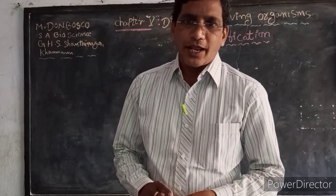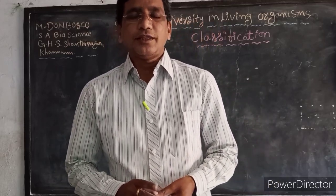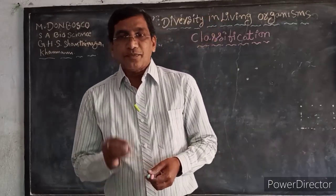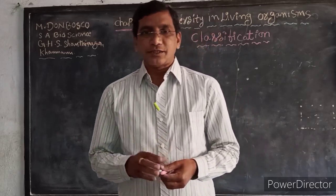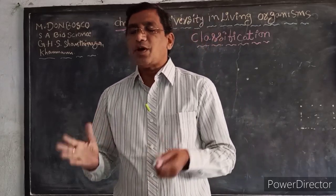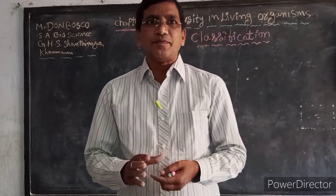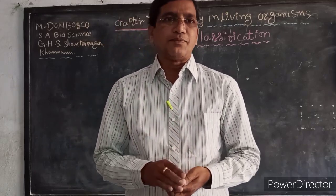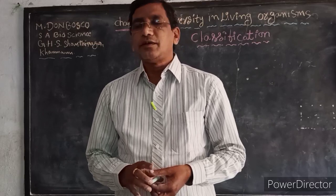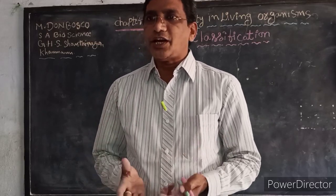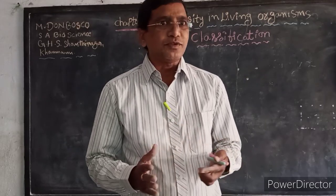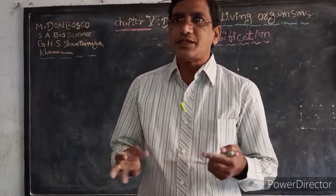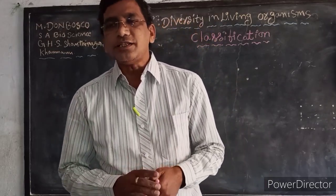This is our fifth chapter in the ninth class Biology. In this chapter, in the previous classes, we are already learning about some of the important things — what is classification, what is the importance of classification. We are doing some experiments and some project works also before the beginning of this chapter. We have collected different plants, leaves, different stamps, different flowers, and different types of things, and collected and observed all these things.